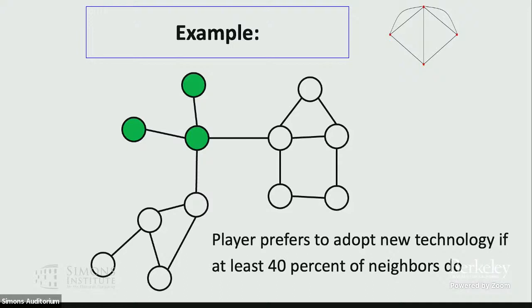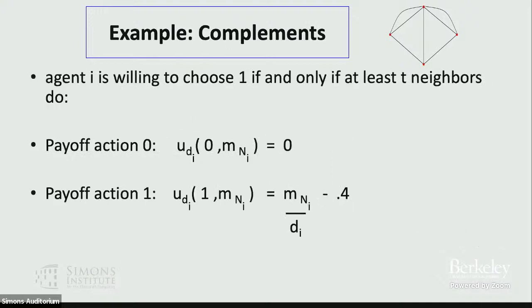When you look at this graph, there are many equilibria. One payoff function that gives this behavior: normalize the utility of not adopting to zero, so the payoff to adopting is the fraction of my friends adopting minus 0.4. That yields the 40% threshold. There could be lots of different payoff functions with different benefits and costs that yield this kind of threshold behavior.